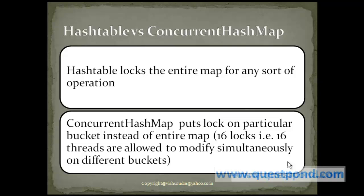In the general case, 16 locks are provided, which indicates 16 different threads are allowed to modify simultaneously on different buckets. Facility is also provided to increase the number of locks, but always increasing the number of locks is not preferable since it causes overhead in maintaining them. So the advantage of concurrent hashmap over hashtable is it performs locking only at the bucket level and not on the entire map level. When a lock is obtained on a particular bucket, other threads that want to access other buckets are free to do so, which naturally increases performance.